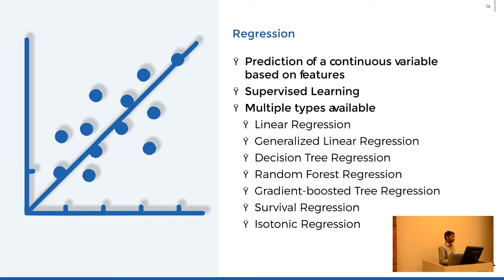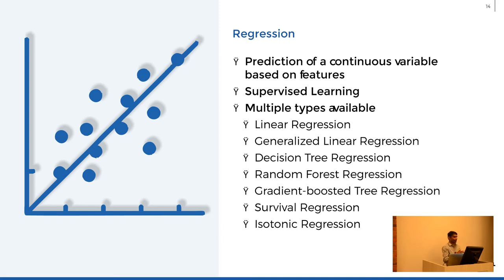Gradient boosted tree is also similar — you start generating one model, see how it performed, find places where it did not predict very accurately, give more weight to those values, and go to the next model. Like this, you are refining all the previous models one step at a time until you find the best model possible with the available resources. You can also do isotonic regression if it is always incremental data. There are various types of algorithms available depending on what the objective function is.